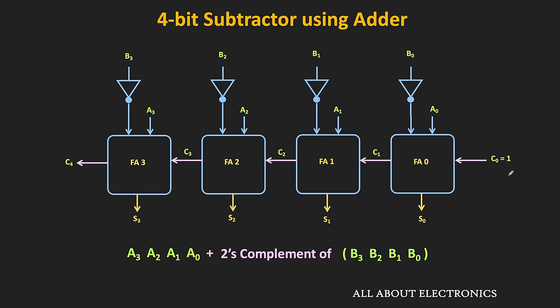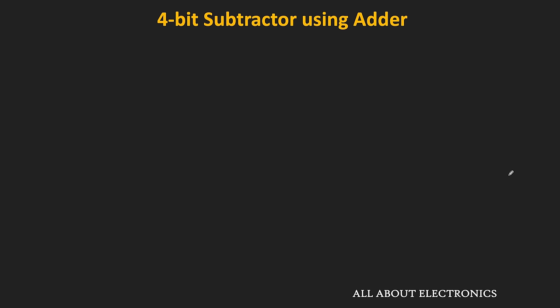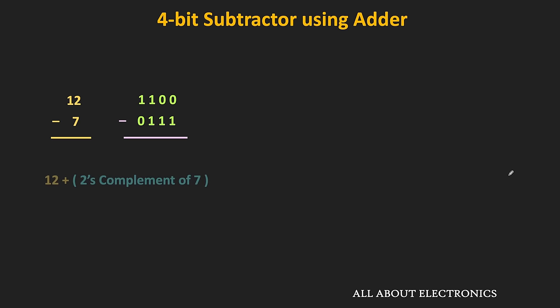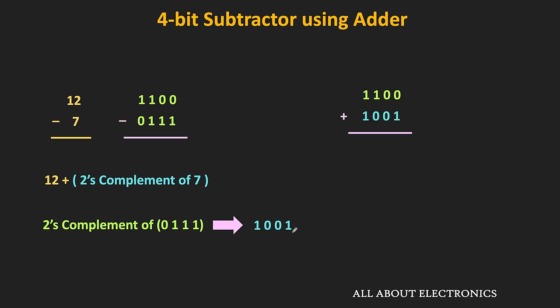Let us take one example to understand the working of this circuit. We want to subtract these two numbers — in binary, 1100 and 0111. Instead of performing the subtraction, we will add 12 with the 2's complement of 7. The 2's complement of 7 is equal to 1001. Effectively, 12 minus 7 equals 1100 plus 1001. So 0 plus 1 equals 1, 0 plus 0 equals 0, then 1 plus 0 equals 1, and 1 plus 1 equals 0 with 1 as a carry. We ignore the final carry, so the final result is 0101, which in decimal is equal to 5.